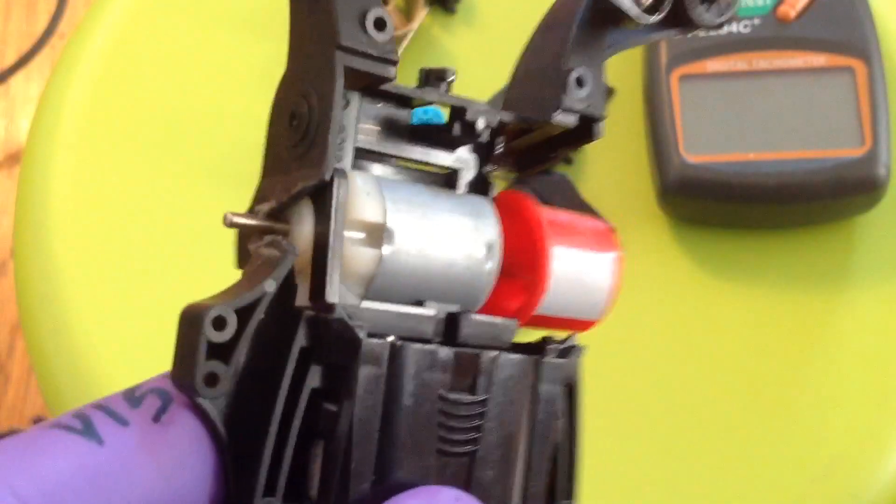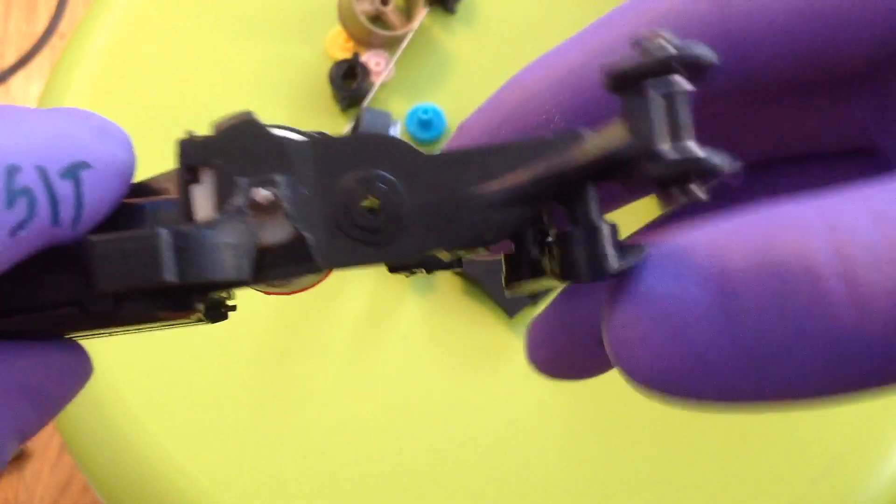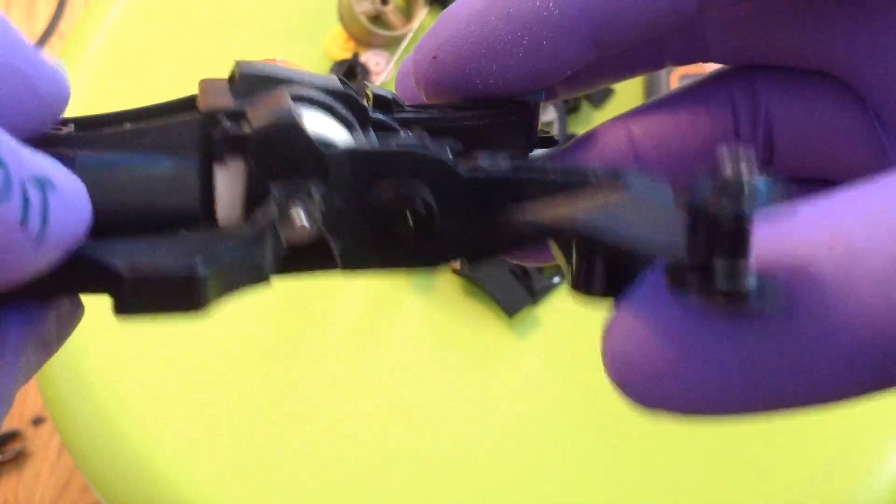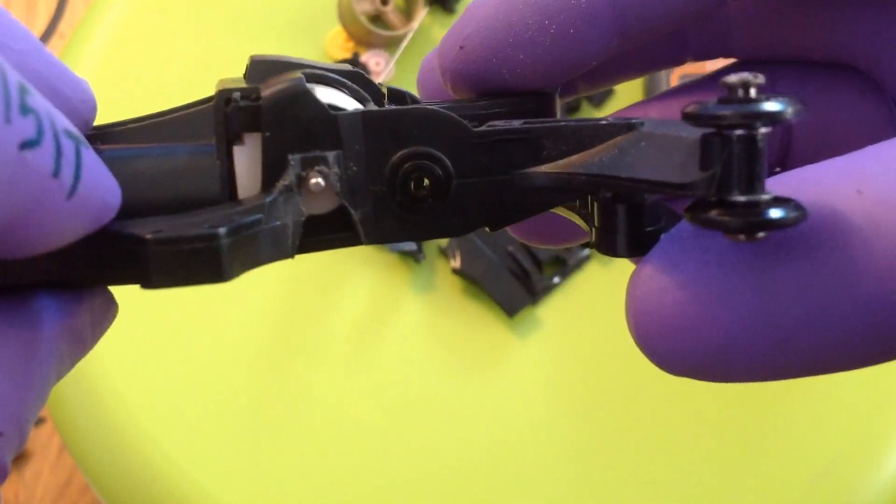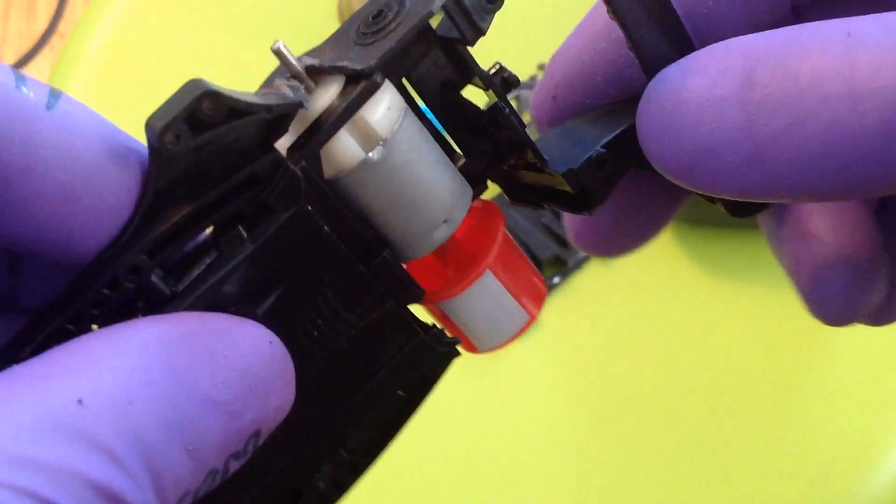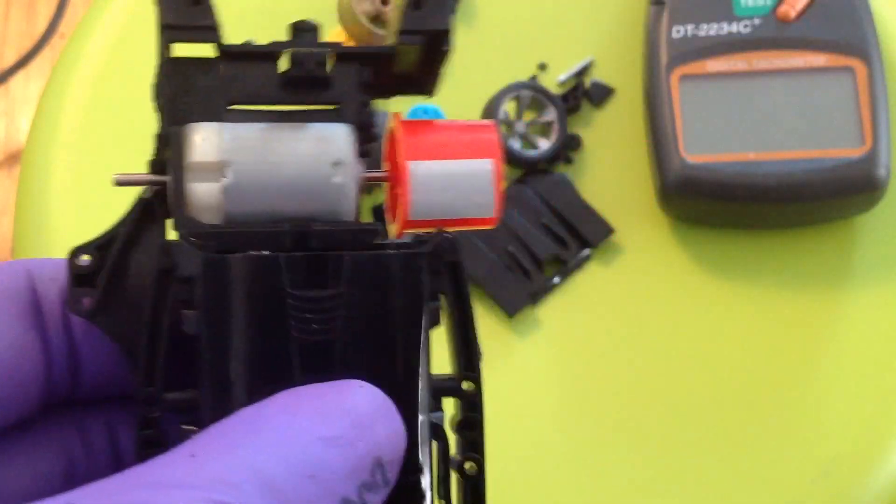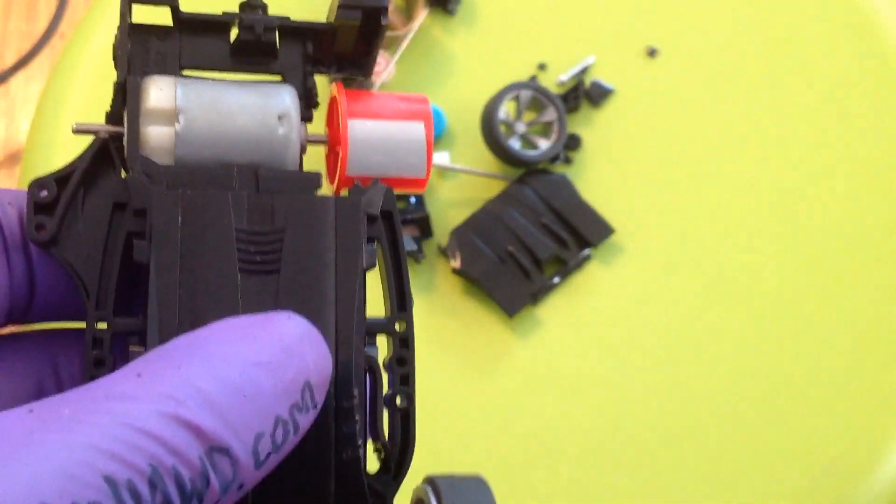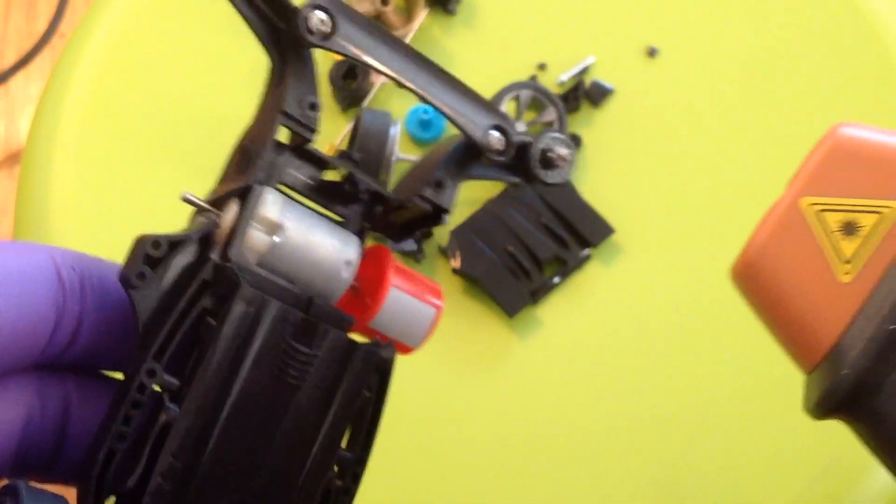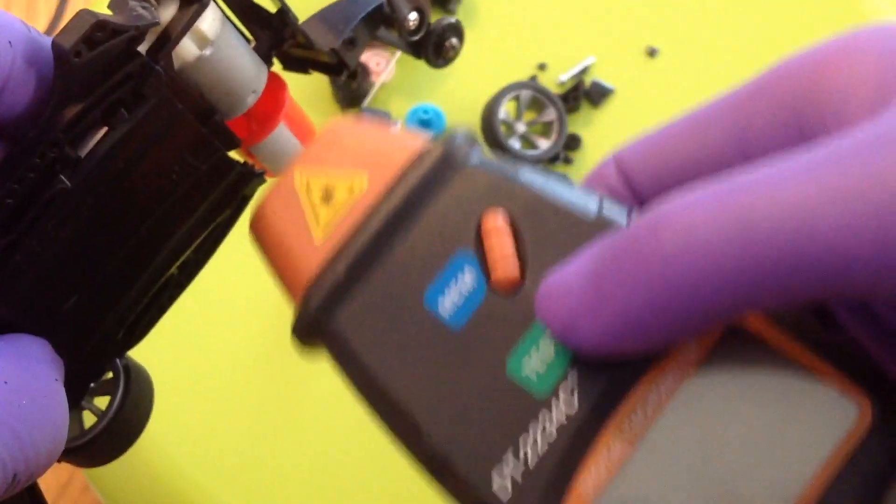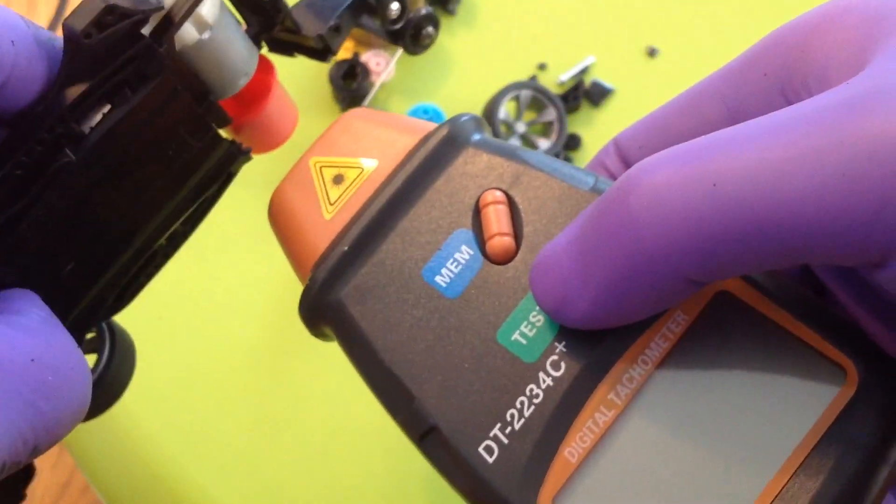Here I am modifying an AR chassis to accept a double shaft motor for testing. Except I did not trim the chassis properly, so there is some friction on the motor shaft. You will see in this test that the motor RPM is only up to 23,570 RPM.